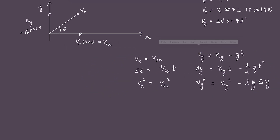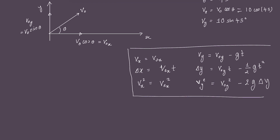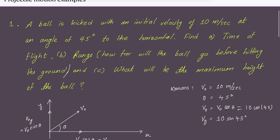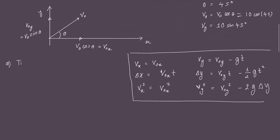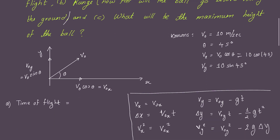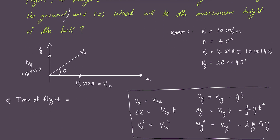Let's put the equations in a box and calculate the first thing — time of flight. The ball starts from a point, follows a parabolic trajectory, and lands back on the ground. We want the total time it takes for the ball to be launched and hit the ground again.